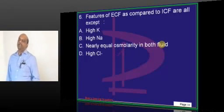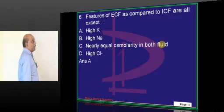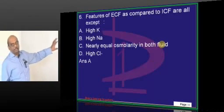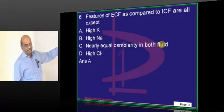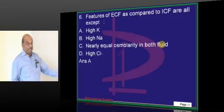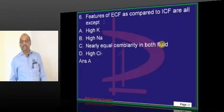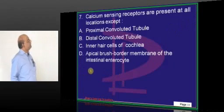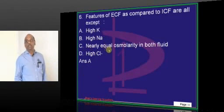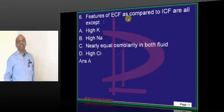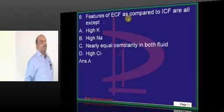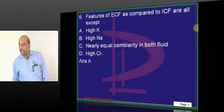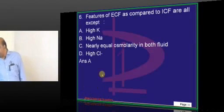ECF versus ICF: sodium is the principal cation of the ECF, and potassium is the principal cation of the ICF — that is what you have to basically remember. The remaining statements are all true.